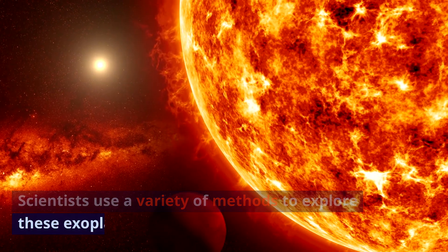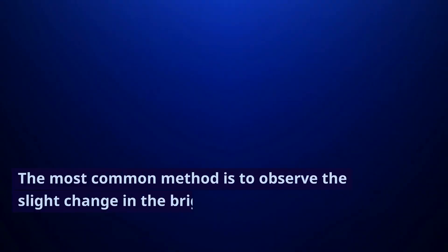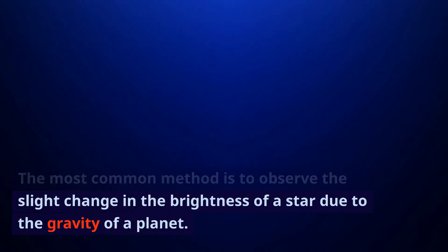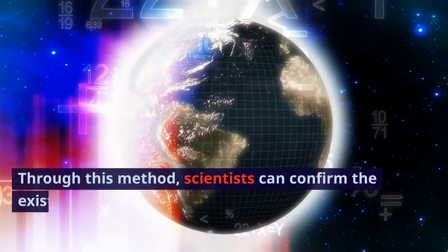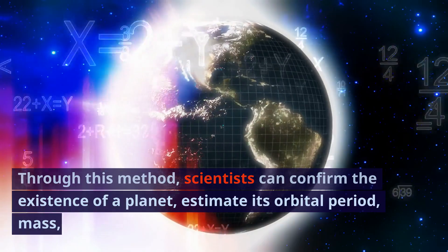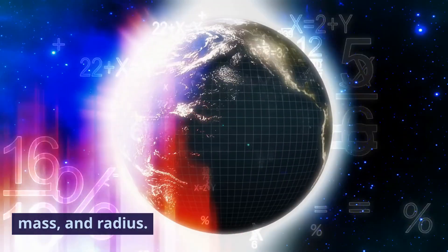Scientists use a variety of methods to explore these exoplanets. The most common method is to observe the slight change in the brightness of a star due to the gravity of a planet. Through this method, scientists can confirm the existence of a planet, estimate its orbital period, mass, and radius.